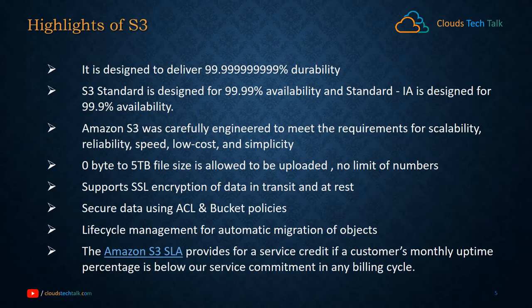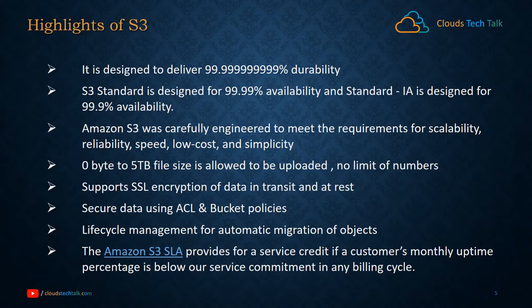So what are the different highlights of S3? First, it is designed to deliver 99.999999999999% durability — called 11 9's durability. That means it is so reliable that you will hardly lose your data; maybe in 1000 years you may lose only one object, and that is also highly unlikely. The second highlight is S3 standard is designed for 99.99% availability, and standard infrequent access is designed for 99.9% availability. That means it is almost always running and available — if calculated, it would be hardly 53 minutes maximum of downtime throughout the year.